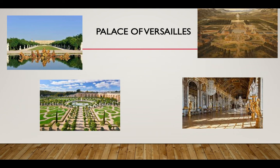It was like MTV Cribs — come in and check out all of this stuff that I have. His gardens were 5,000 acres of lawns and woods with 1,400 fountains. He loved walking through the gardens and wanted his fountains to spit out water as he went by. It cost too much to keep water constantly flowing, so people had to walk ahead of him to make sure the fountains were running when he arrived.